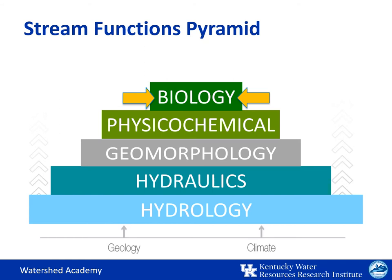A healthy aquatic ecosystem must have sufficient water contributed from the watershed, the right levels of hydraulic forces, proper bed diversity and channel stability, suitable temperature and oxygen regimes, and so on. The value of the pyramid at this level is that it helps regulators, scientists, and engineers identify the underlying functions that must be present in order to achieve improvements in biological quality.